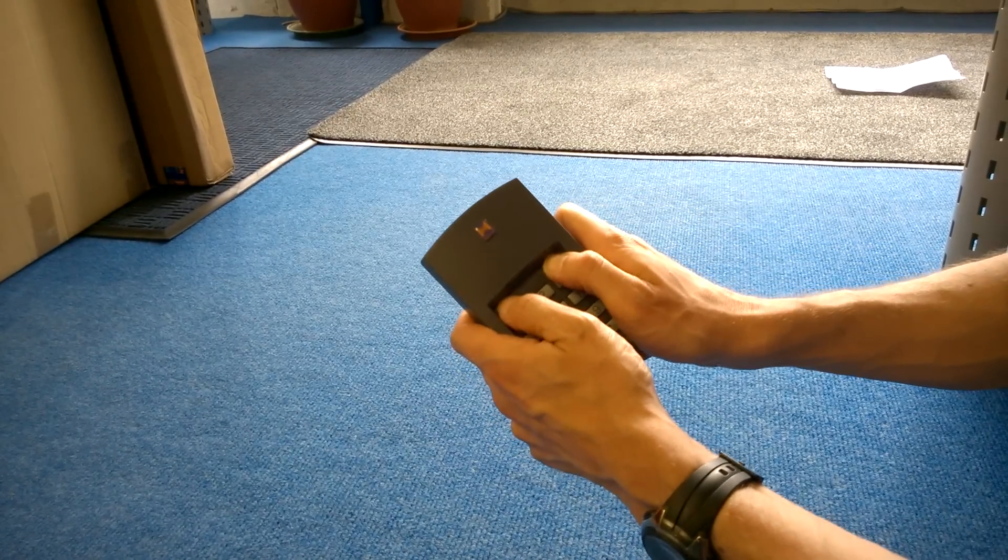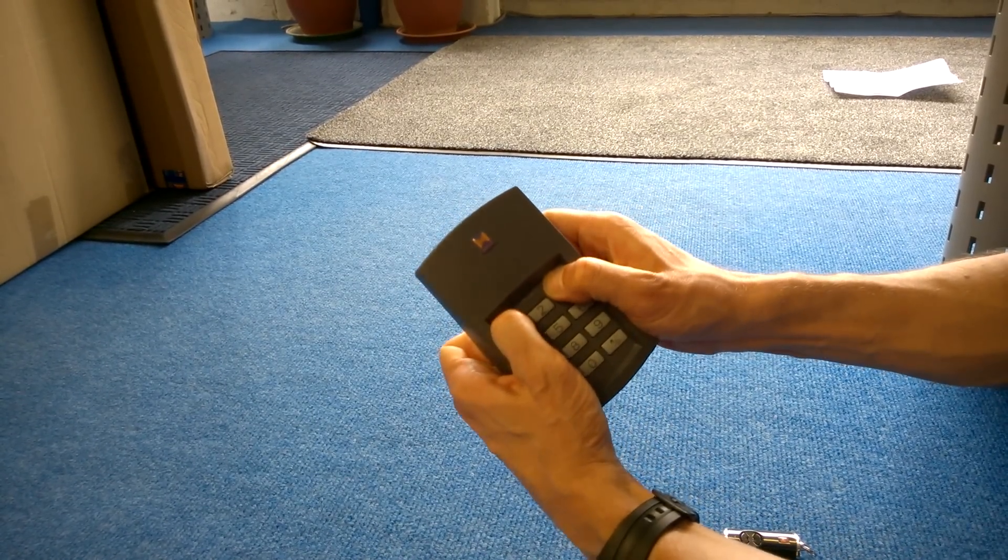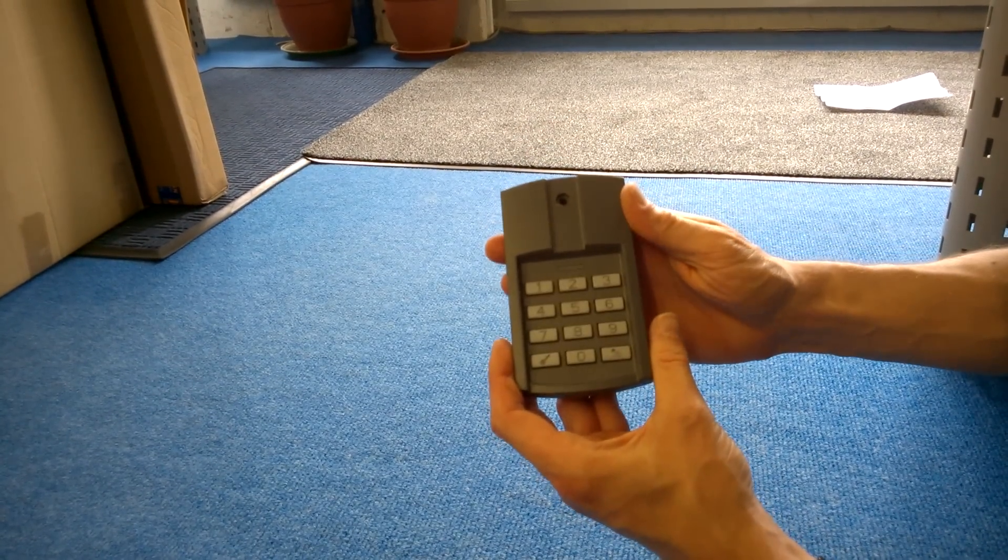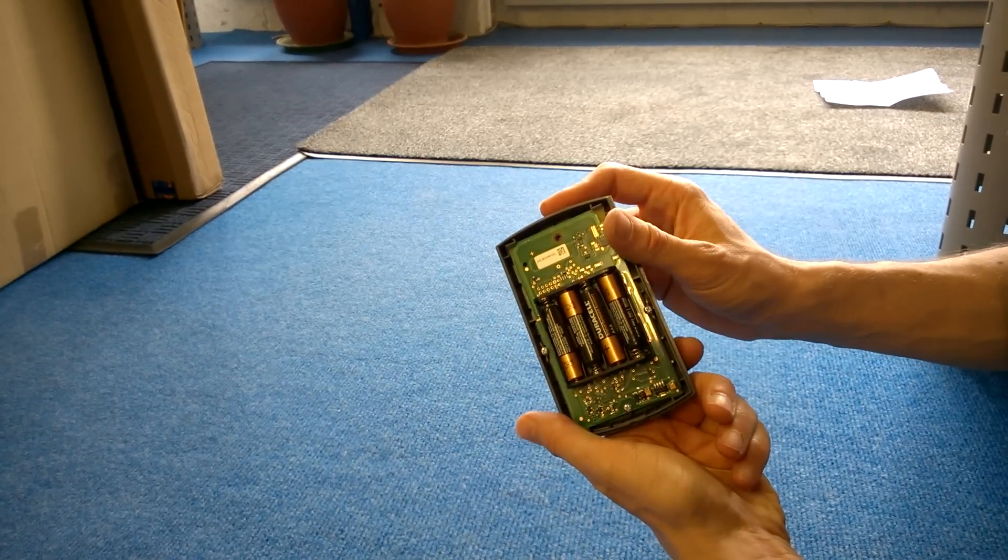To get the cover off, you put your thumbs above the numbers, pull the cover out to the side and up. That will allow your access to the screw so you can take the front off. I've already put the batteries in on this.